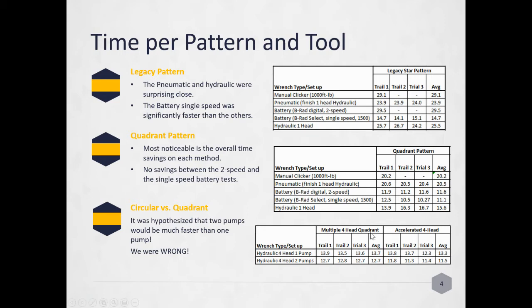The battery single speed, 11 minutes versus 14. With the hydraulic, you save 10 minutes out of 25. That's a big time savings percentage-wise. You can save a decent amount of time by doing the quadrant pattern.